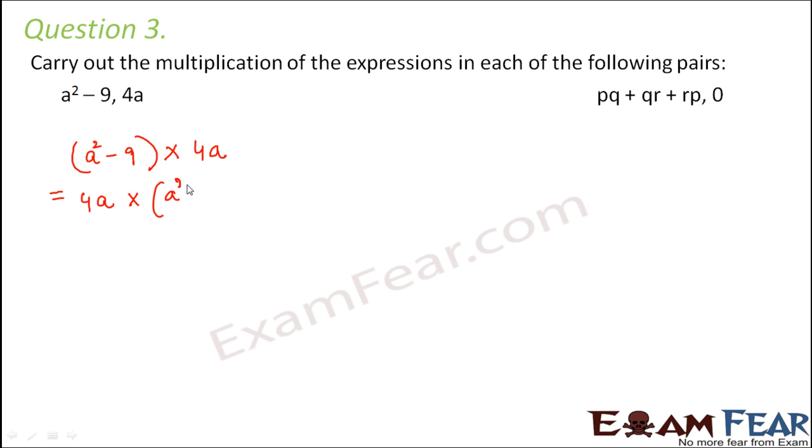Now let's apply distributive law - that is, a multiplied to (b - c) equals a multiplied to b minus a multiplied to c. So this becomes 4a into a² minus 4a into 9. So 4a into a² would be 4a³, and 4a into 9 would be 9 into 4 is 36a. So 4a³ - 36a would be the product.